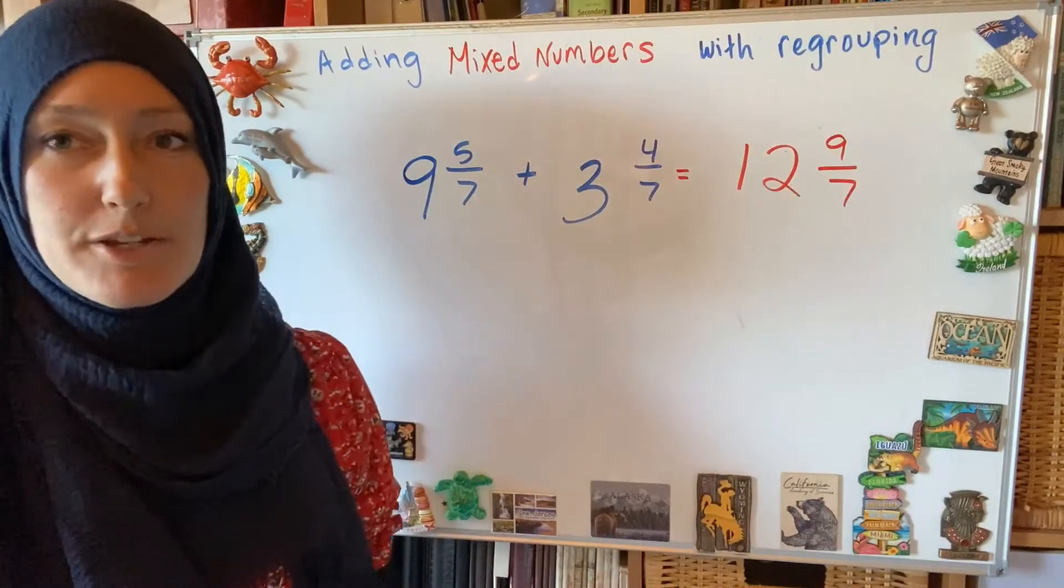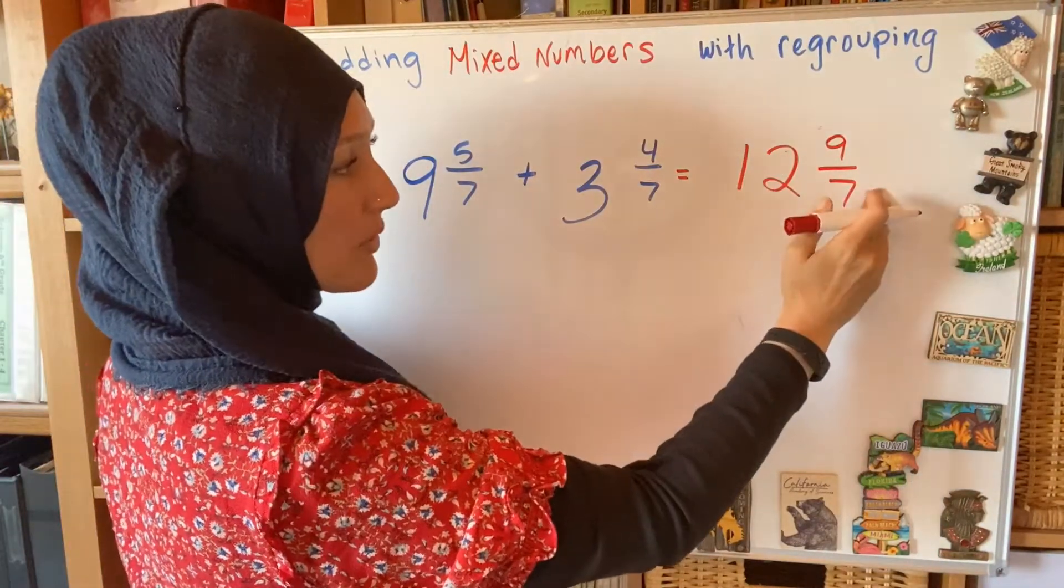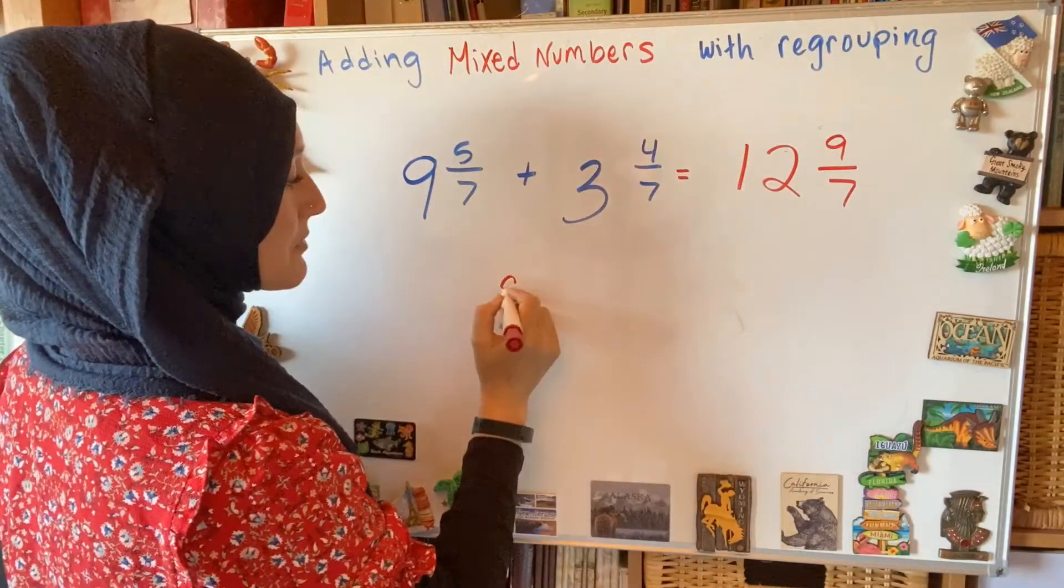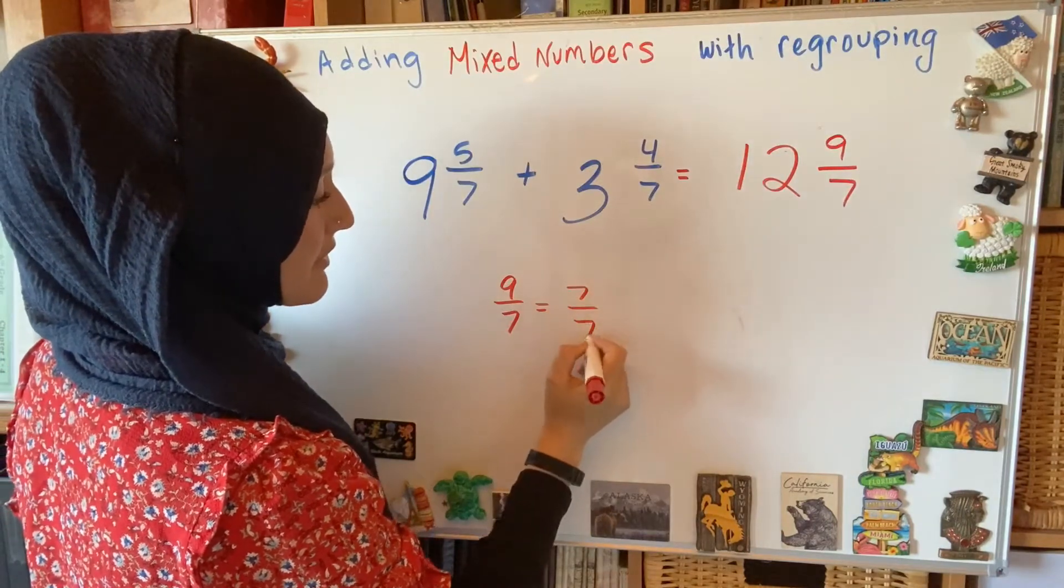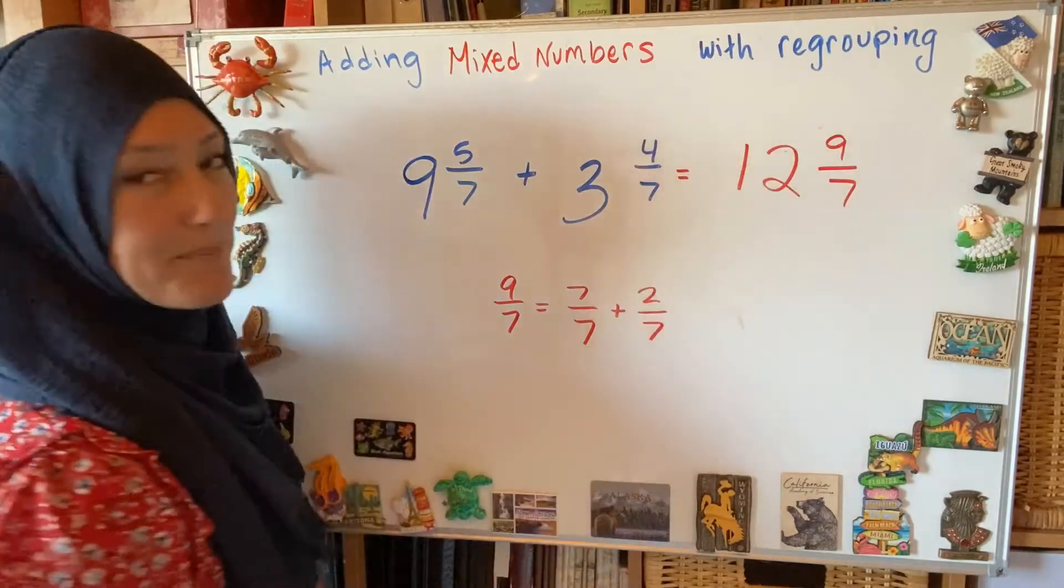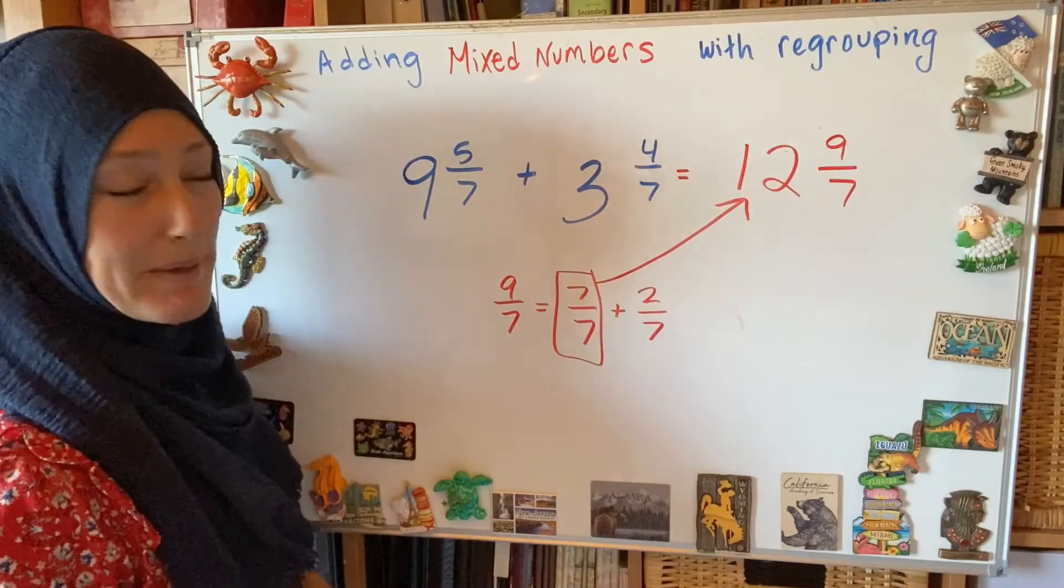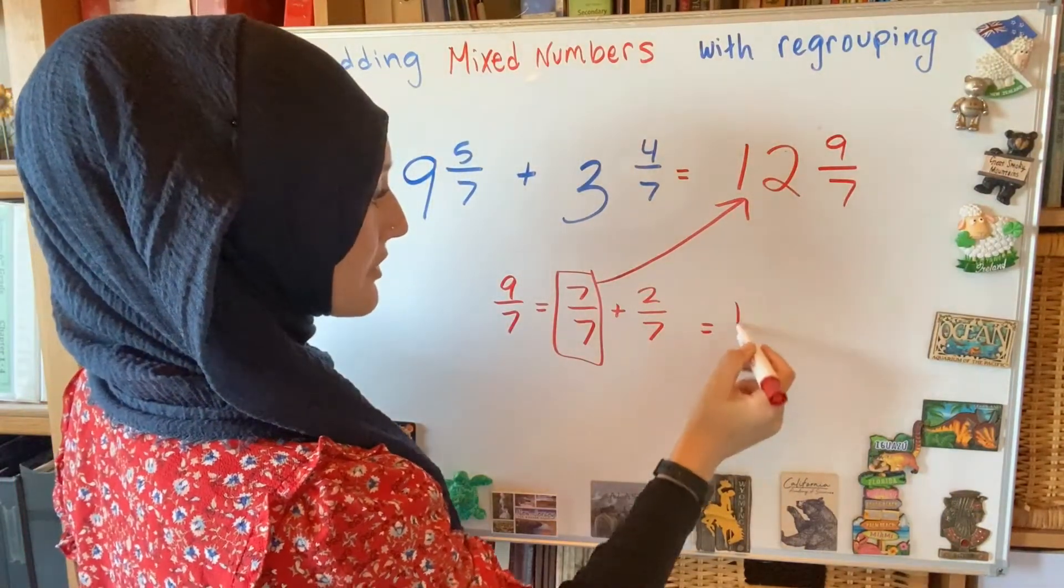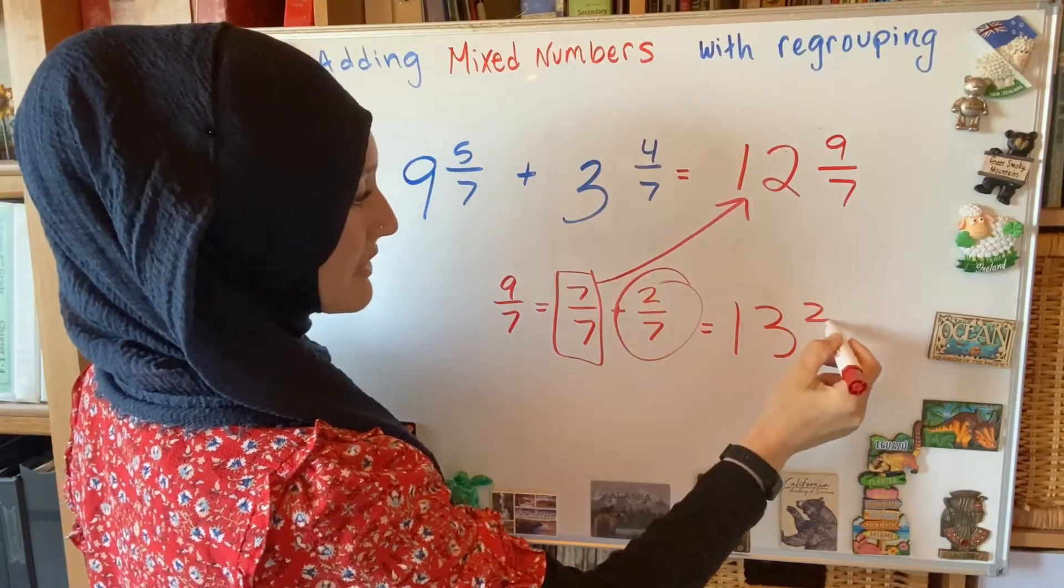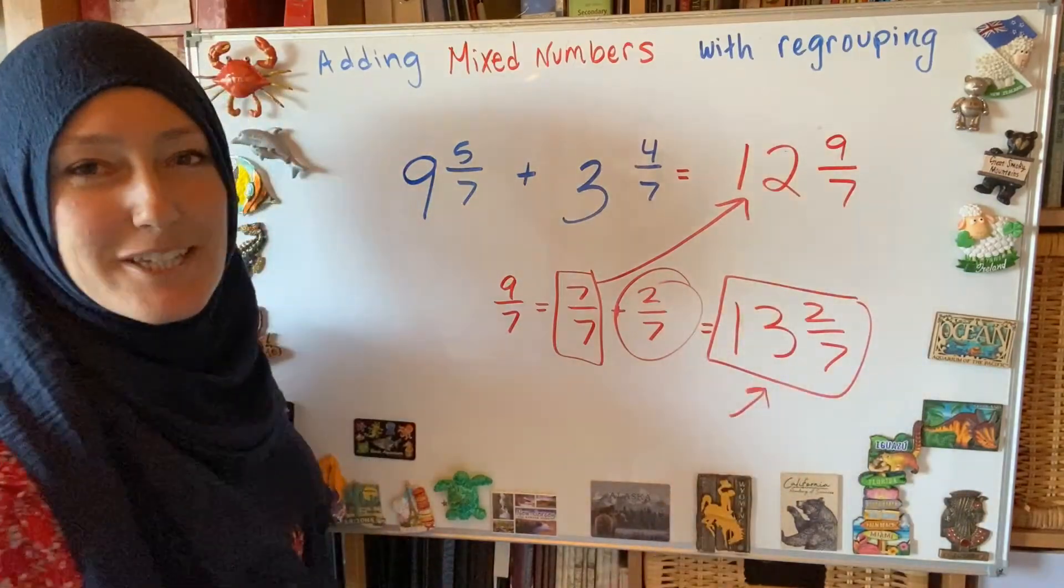Then I look over here. I can't have an improper fraction as part of it. I need to regroup that and give some of the wholes that are in here, I need to give them back to that whole amount. So my 9 sevenths is really like saying 7 sevenths and 2 sevenths. So if I take this whole amount right here and I give it to my whole amount here, what I have left is 13 and my leftover right here, 13 and 2 sevenths. So that is my final answer.